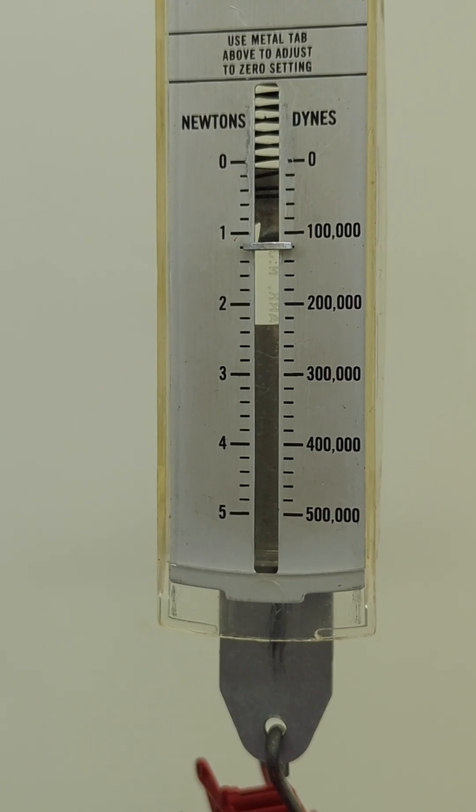So this spring scale was calibrated earlier. You can see my last video on how to calibrate it. It was calibrated to read the top of the bar to the top of each black line.